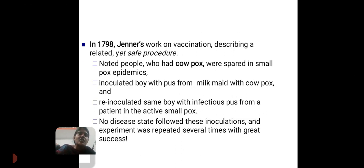In 1798, Jenner worked on vaccination. He described a related but safer procedure. Cowpox was spreading in a smallpox epidemic. He inoculated a boy with spores from a milkmaid with cowpox and re-inoculated the same boy with infectious spores from a patient with active smallpox.